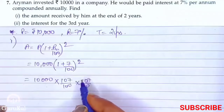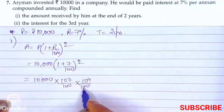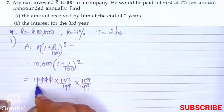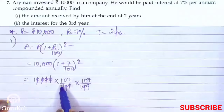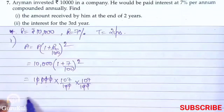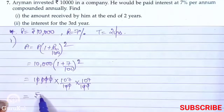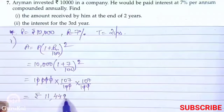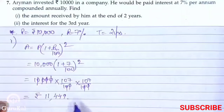We cancel equal numbers of zeros — four zeros cancel — leaving 107 × 107. That gives us the amount of Rs. 11,449. So here we have our amount for the first part.